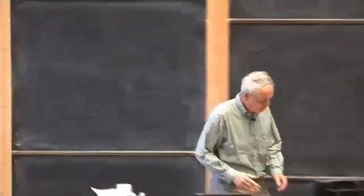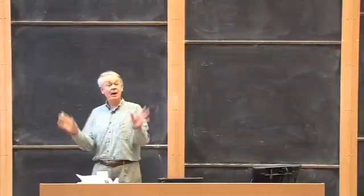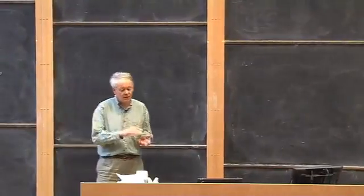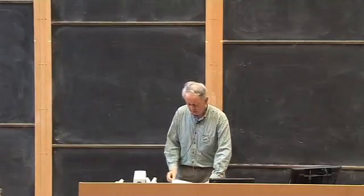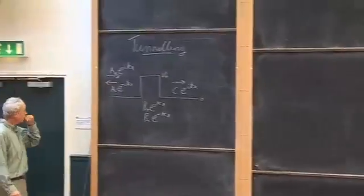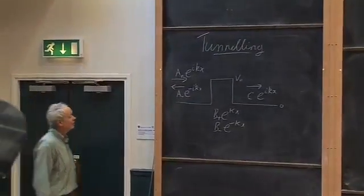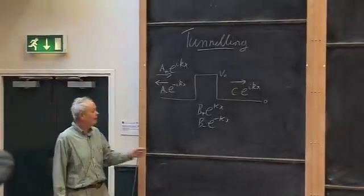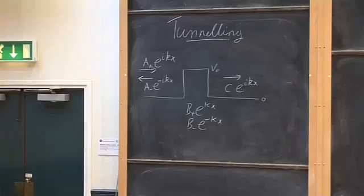Yesterday we looked at a pair of wells separated by a barrier so that classically the particle couldn't get from one well to the other, yet we found that it did. We used that to make a model of an ammonia molecule with a nitrogen atom passing through the barrier formed by the hydrogen atoms. Now let's look at this phenomenon from another perspective — the perspective of a scattering experiment — and we'll come on to what this has to do with radioactivity at the end.